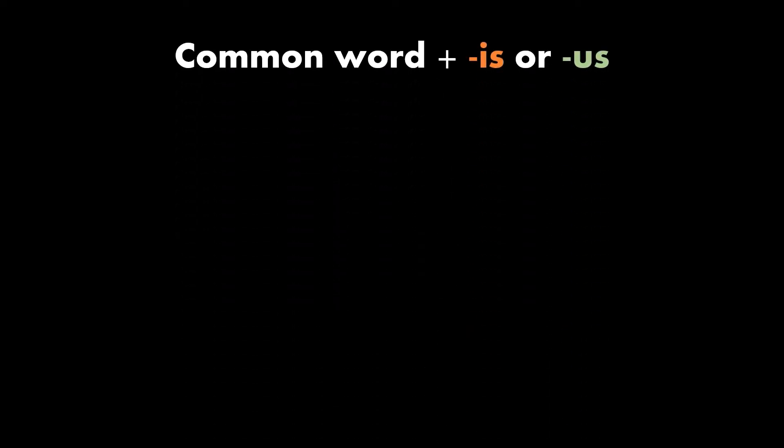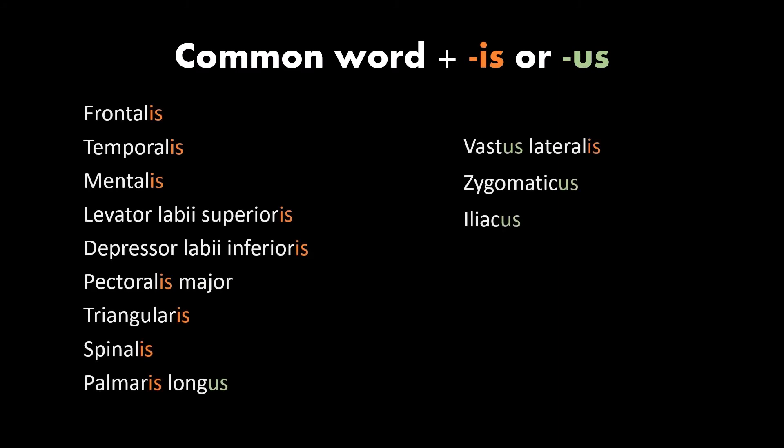A lot of the time the name of a muscle is a word that you already know with an '-is' or '-us' tacked on the end. You already know the temporal bone and the temporal region — let me introduce you to the temporalis muscle, which is just 'temporal' with an '-is' on it. You know the word triangular — there's a triangularly shaped muscle on your face called the triangularis. There's no reason to have trouble spelling 'superioris' because it's just 'superior' with an '-is.' Once you take note of that, it makes things a little bit easier.